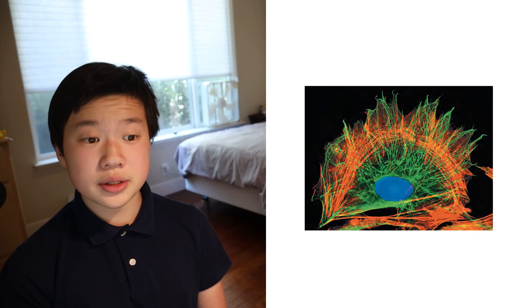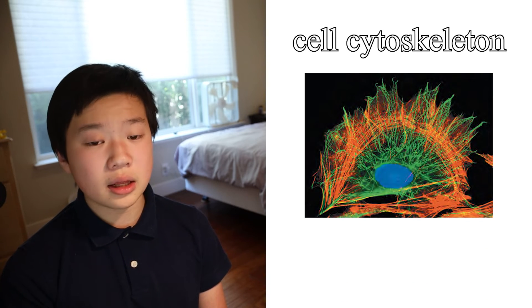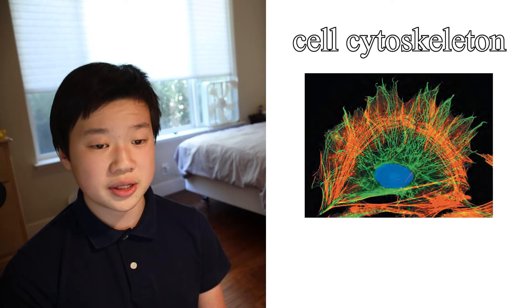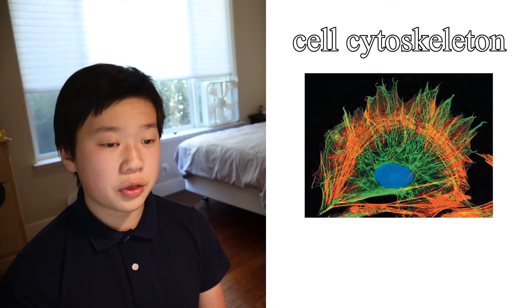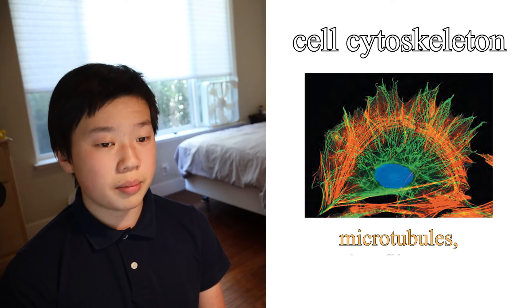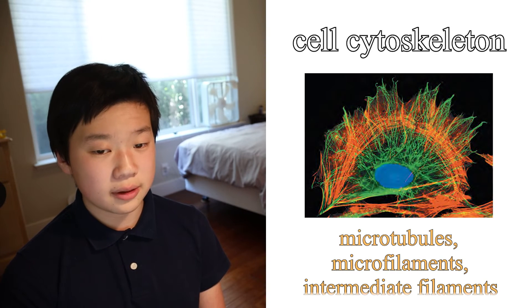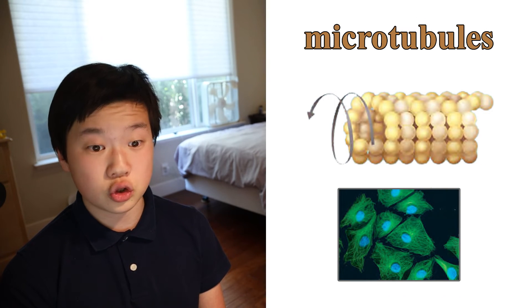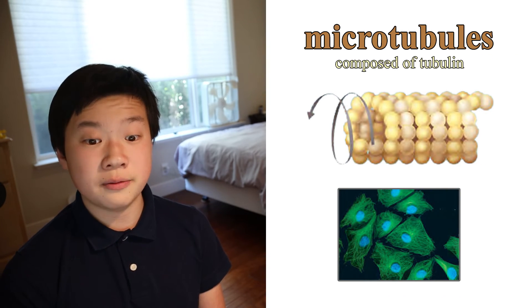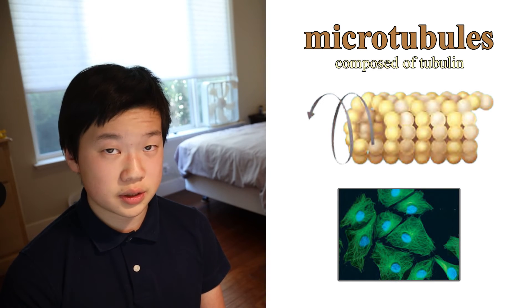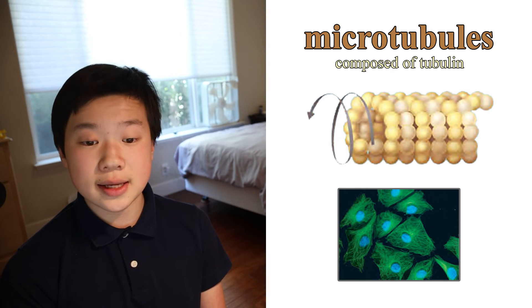The cytoskeleton is a network of fibers extending throughout the cytoplasm that organizes and supports the structures of the cell. It is composed of three different types of molecular structures: microtubules, microfilaments, and intermediate filaments. Microtubules are hollow tubes composed of a protein called tubulin. They act like a conveyor belt for the cell, guiding transport vesicles to their destinations. They also assist in cell division.